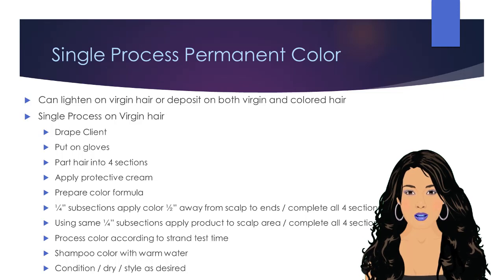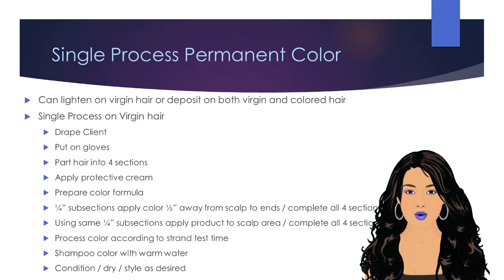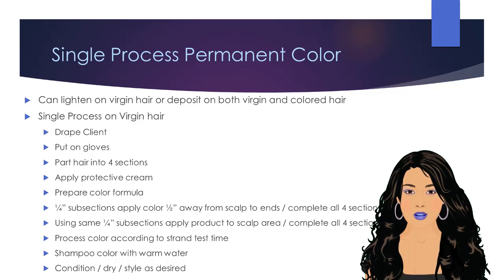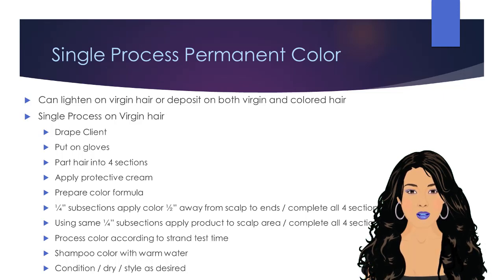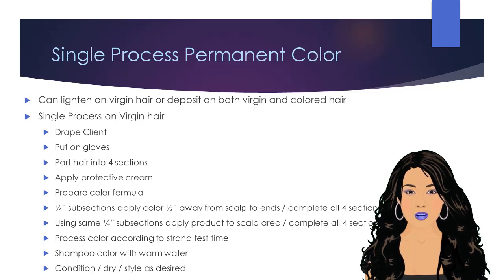Allow the color to process according to the strand test results. Once the desired shade is achieved, shampoo the color out with warm water, condition, dry, and style as desired.